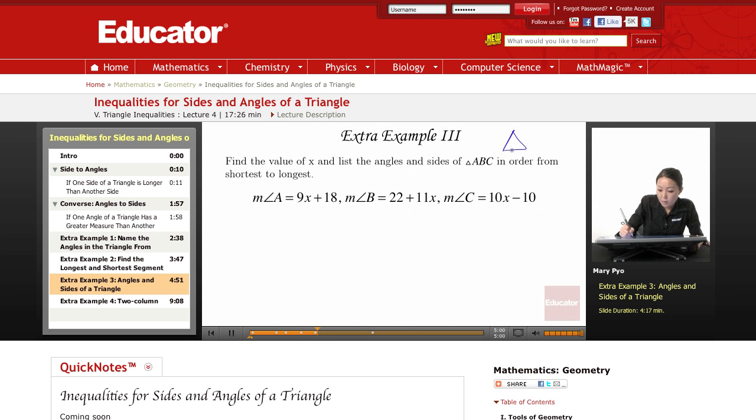So if you have a triangle ABC, and here they're giving us these angles, all three angle measures, and they want us to just list the angles and the sides in order from least to greatest or shortest to longest.